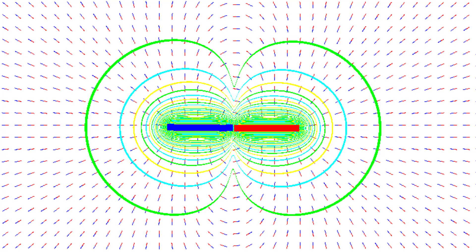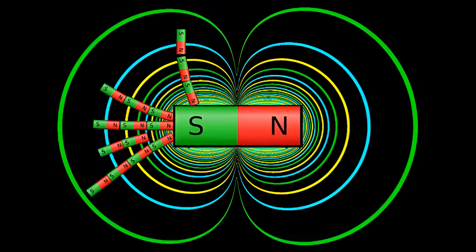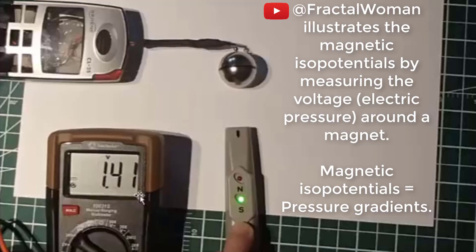The magnetic field lines can be thought of as many smaller magnets surrounding a bigger magnet. The isopotential lines are perpendicular to the magnetic field. Fractal Woman illustrates the magnetic isopotentials by measuring the voltage or electric pressure around a magnet.